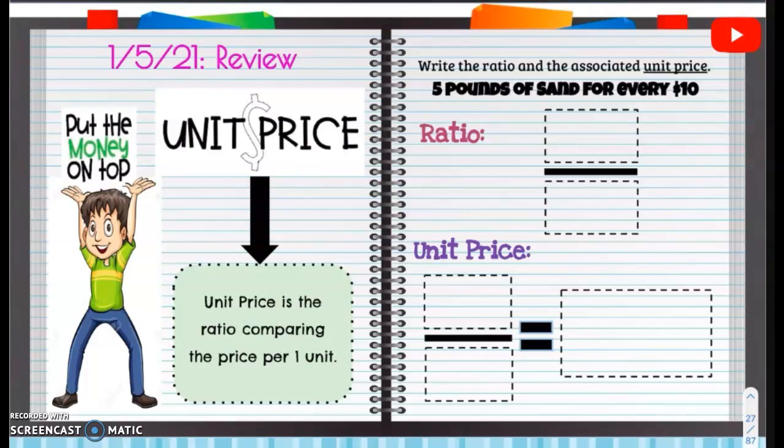So remember, five pounds of sand for every $10. Remember, when we're doing unit price, what must happen? Money on top.